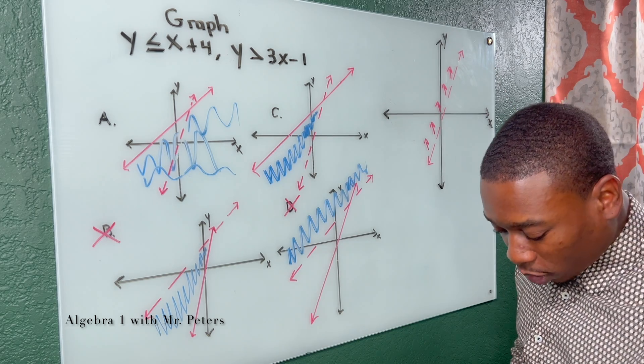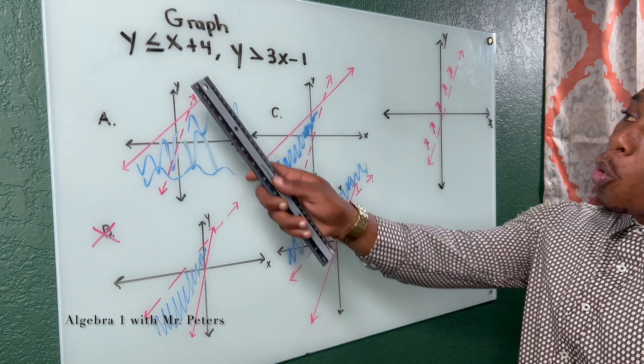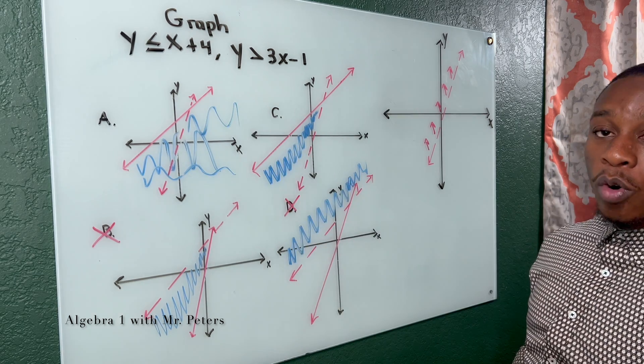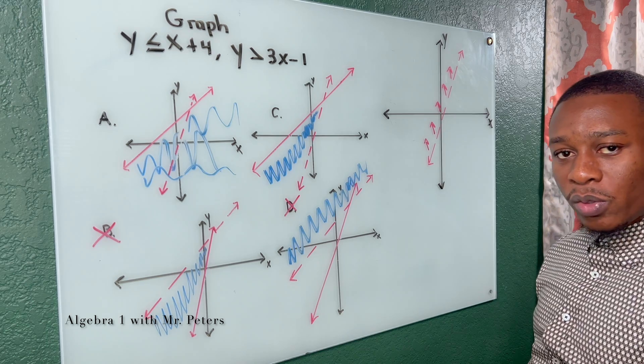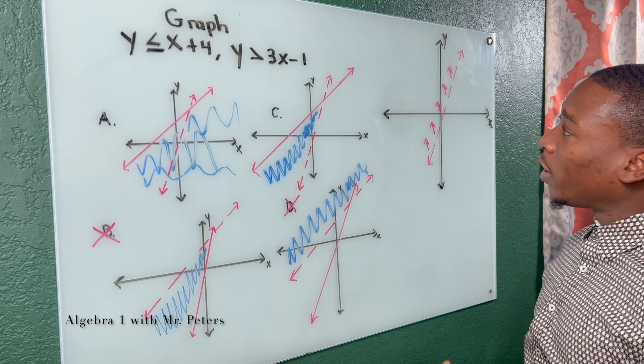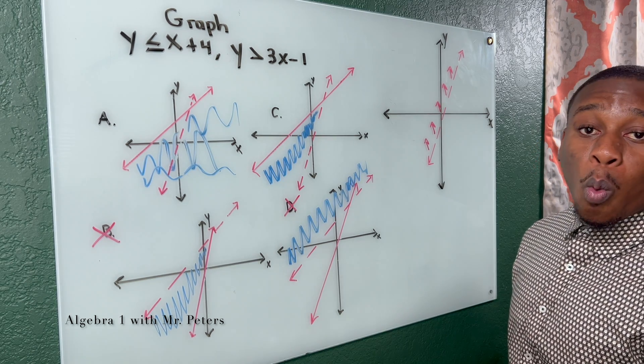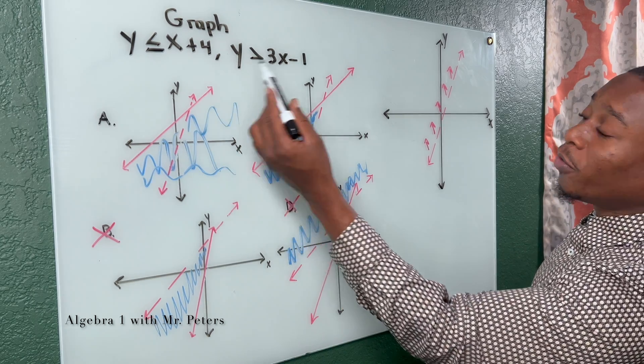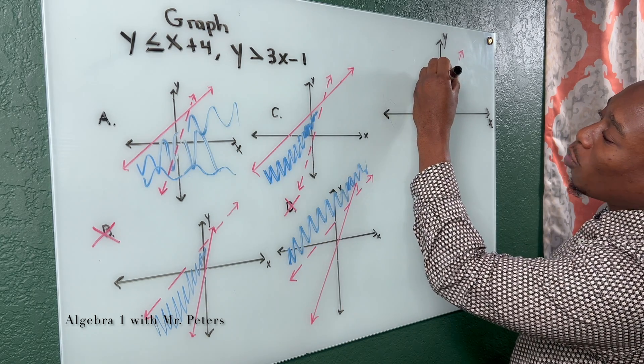Now let's switch colors and let's go to black. So Y is less than or equal to x plus 4. So because it has the or equal to sign, it's going to be a solid line. We know that the y-intercept is going to be 4. So it'll probably be somewhere up here.